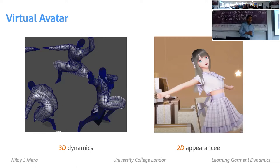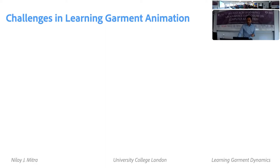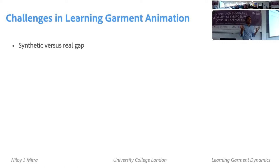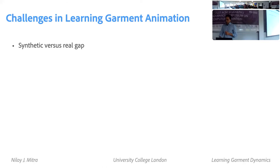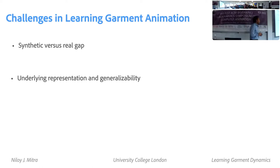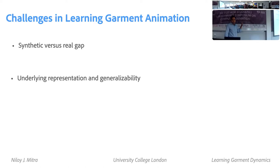What are the challenges? One challenge is the gap between synthetic and real data. We use some synthetic model — a developable model or similar — to create data, but there is a difference with real data. That's a geometric part; there's also an appearance difference. The underlying representation plays a huge role in generalization, and that's quite important for us. These two points are also related because the amount of data we can collect is limited, so we need something that doesn't overfit.